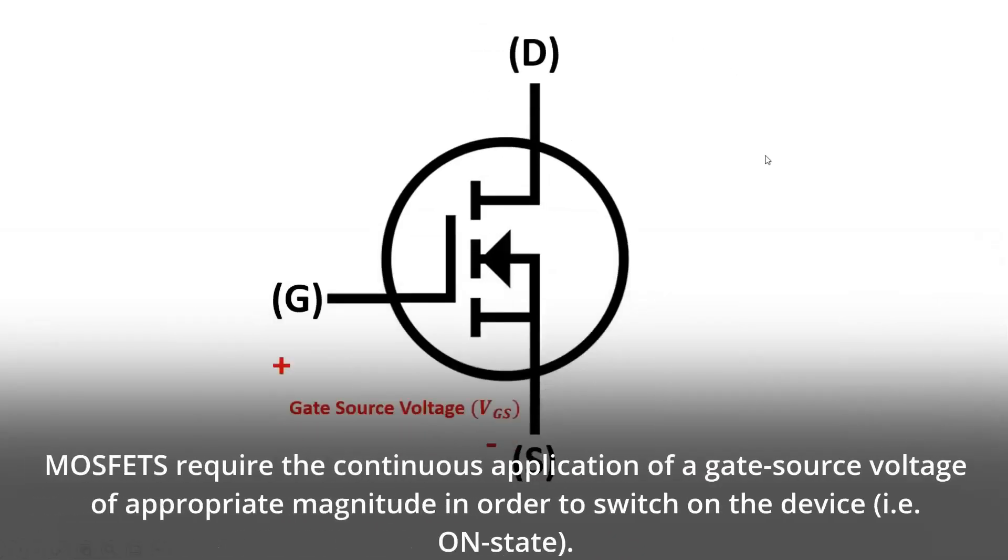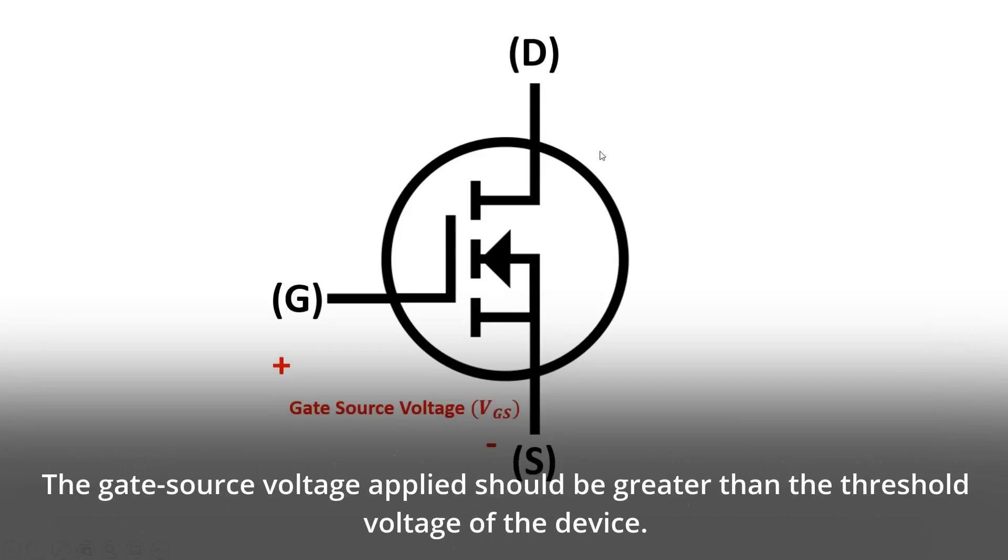MOSFETs require the continuous application of a gate source voltage of appropriate magnitude in order to switch on the device (i.e. on-state). The gate source voltage applied should be greater than the threshold voltage of the device.